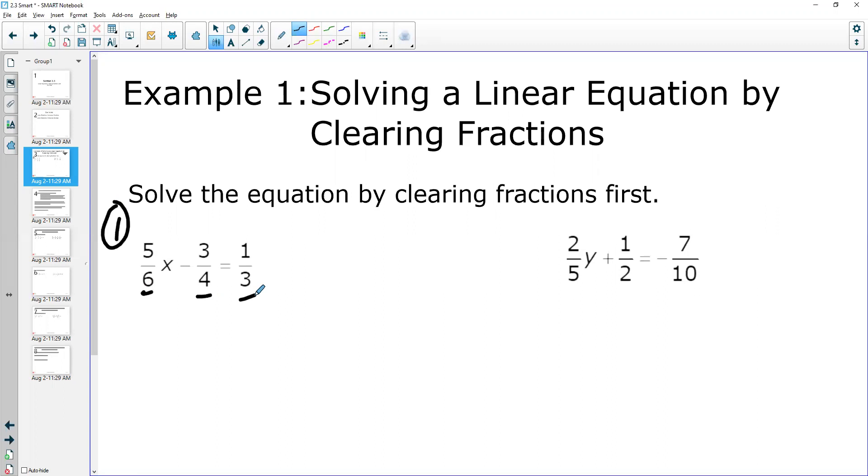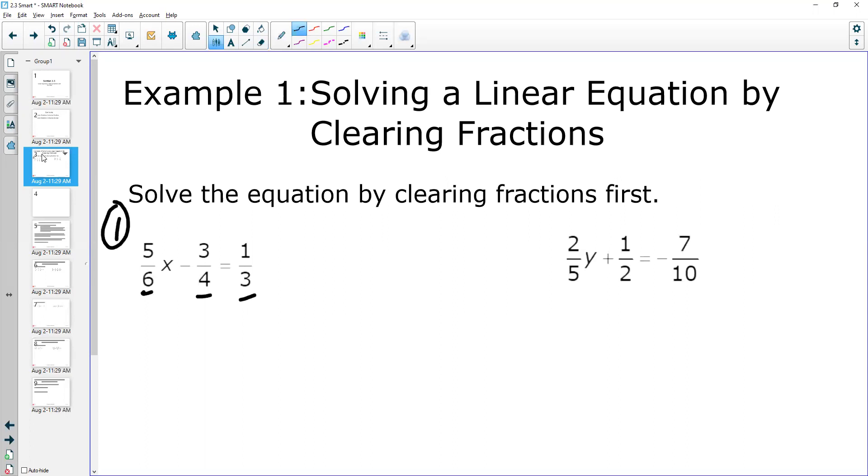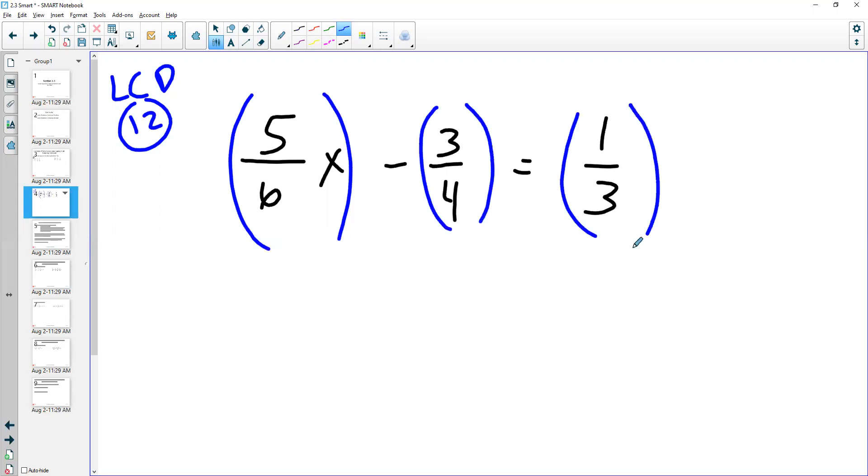Okay, and what I'm going to do, and actually I'm going to do this one bigger on another slide just because it would be easier to see. So let's see what the problem is. Five sixths x minus three fourths equals one third. I want you to really be able to see what happens. So the least common denominator here is 12. So what I'm going to go through is I'm going to multiply everything, every item in here by 12.